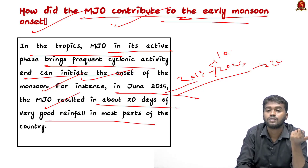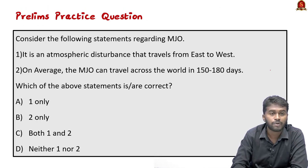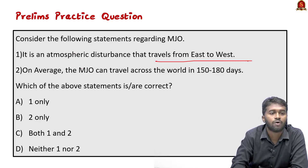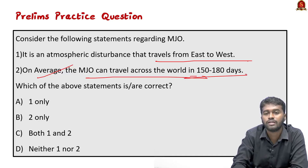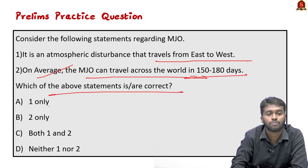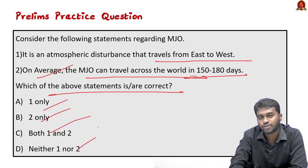Coming to the prelims practice question: Consider the following statements regarding the Madden-Julian Oscillation. Statement one: It is an atmospheric disturbance that travels from east to west. Statement two: On an average, the Madden-Julian Oscillation can travel across the world in 150 to 180 days. Which of the above statements are correct? Option A: One only. Option B: Two only. Option C: Both one and two. Option D: Neither one nor two. Post your answer in the comments. Thank you.